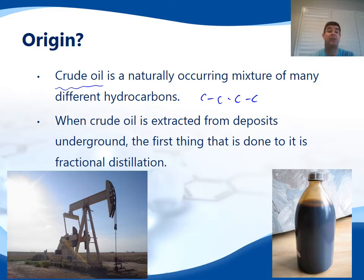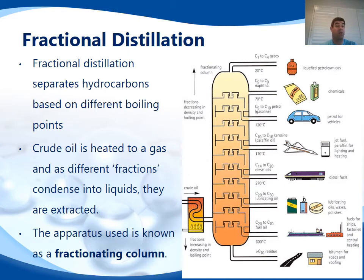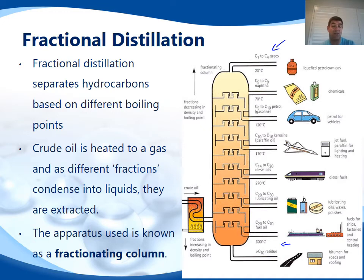When crude oil is extracted from deposits underground, the first thing we have to do is separate the fractions, and we do that through a process of fractional distillation. You should be aware of this process because we covered it in the preliminary course. It's basically a separation process based on the physical property of boiling points. Different fractions have different boiling points and hence can be separated on that basis. The very small carbon chains have the lowest boiling points and separate out very quickly, while carbon compounds in excess of 70 carbons have a much higher boiling point.